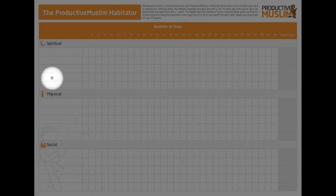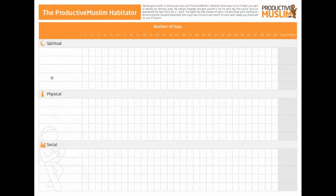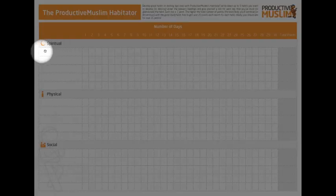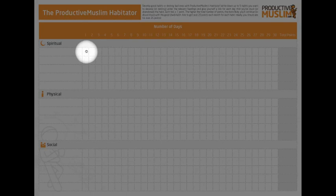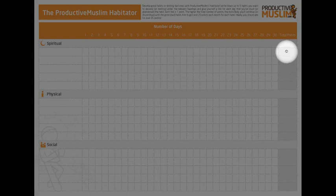This habit list or Habitator will help you develop good habits or destroy bad habits. Once you've written your habit for the month, simply give yourself a tick under each of these days — this is the number of days in the month: first day, second day, third day. Give yourself a tick whenever you actually do the particular task or habit, and leave it blank if you haven't done it. At the end of the month, give yourself a total points score. Your target should be above 25. If for 25 days you're able to maintain this habit in a single month, you have successfully developed this habit. And if you were able to stop doing a bad habit for over 25 days, that's a good sign that you've almost destroyed the habit.